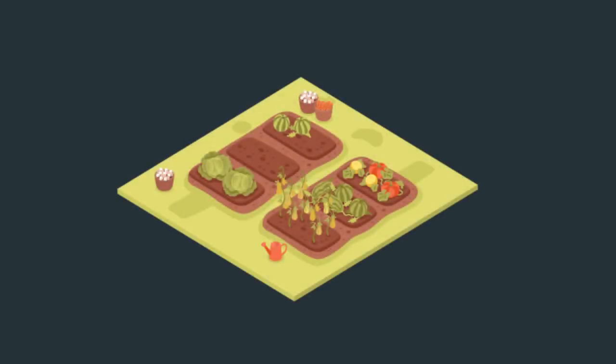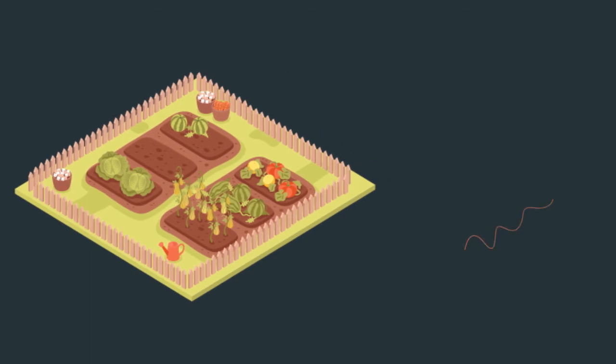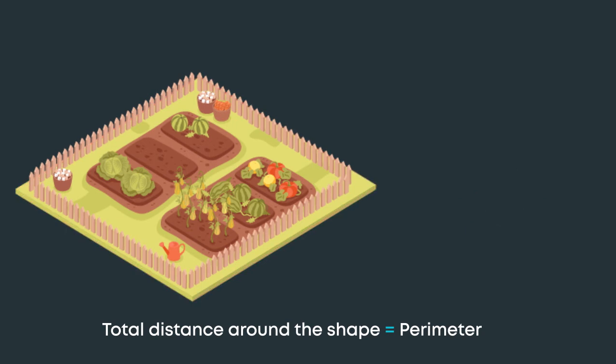Let's take another example. Rohan bought a land for farming. He wants to build a fence around the land so that no animals enter his land. He needs to know how much wire will be required for the fencing. He should calculate the total distance around the shape, or the perimeter.